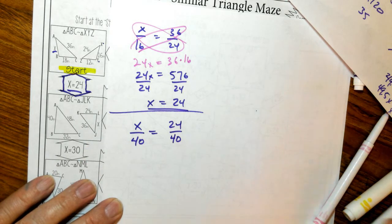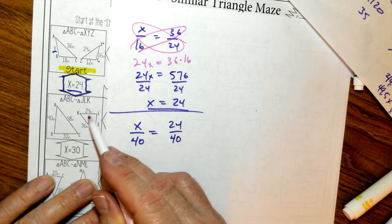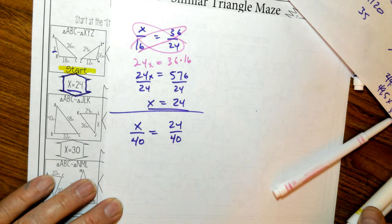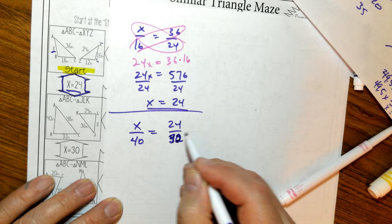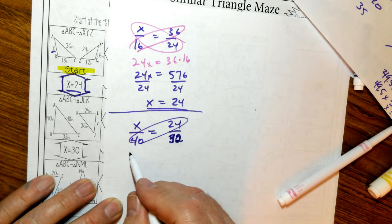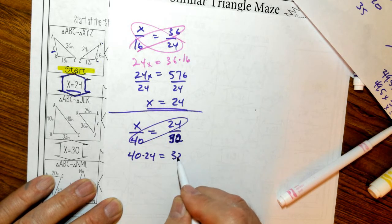So I'm going to do my cross product. 24 maps to 32, not 40. This is 32. Okay. So now my cross product is going to be 40 times 24 equals 32X.